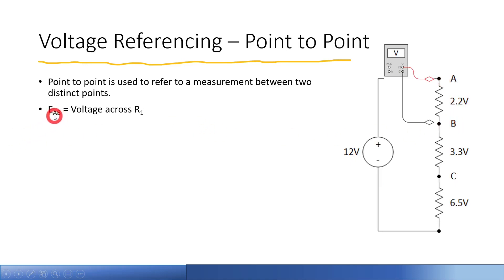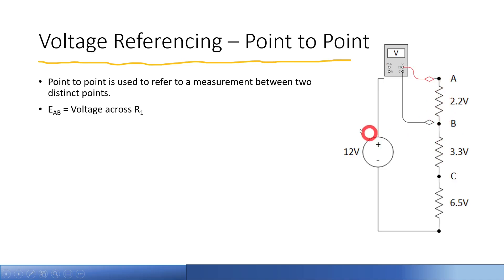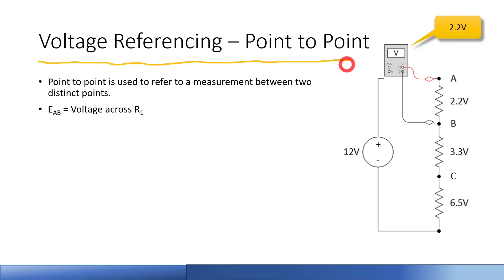For EAB, point A is where you put your red lead, and point B is where you put your black lead. In this case, we're measuring across the first resistor R1. The meter would read 2.2 volts. That's pretty straightforward.